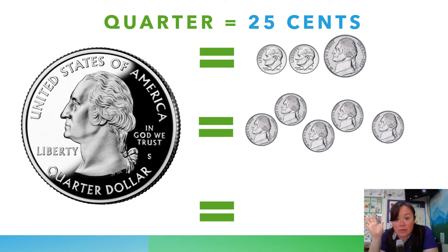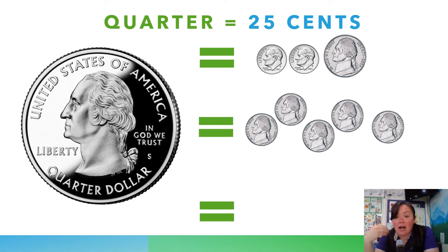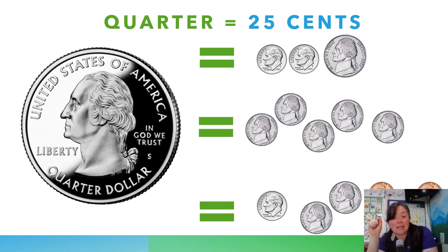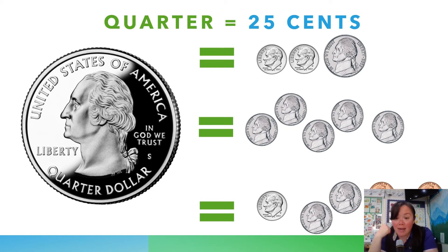Next is all nickels: 5, 10, 15, 20, 25 — so five nickels gives you 25 cents. The last combination: one dime is 10 cents, then two nickels make another 10 cents, and behind my head is 5 pennies, giving you a total of 25 cents.